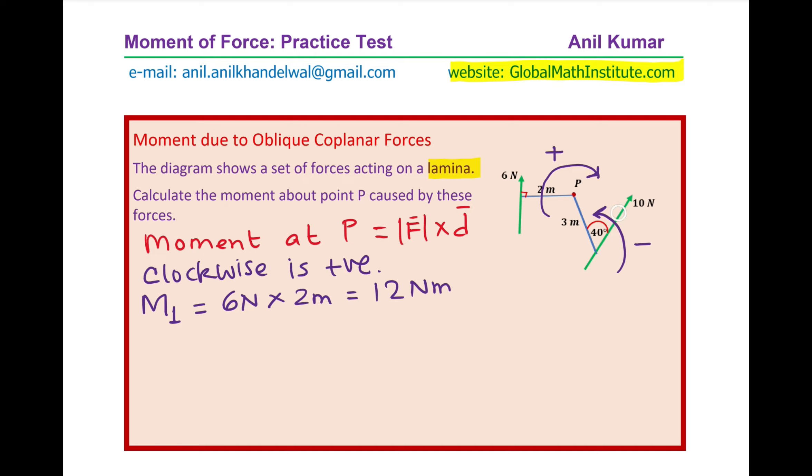However, to find the moment due to the other force, we will have to resolve this into the component which is perpendicular to the line of action or we can resolve the distance. So this distance of 3 meters, we can make a triangle here. The shortest distance will be P to M. So what is PM?